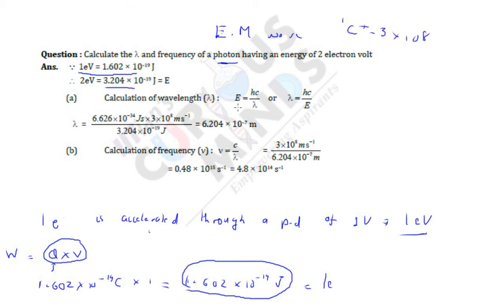Substituting the values, we get the value of lambda, which is 6.204 into 10 raised to minus 7 meters. Or you can write it as 6204 into 10 raised to minus 10, which is in Angstroms.